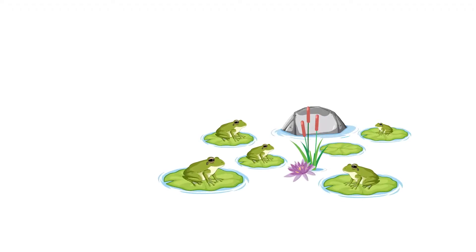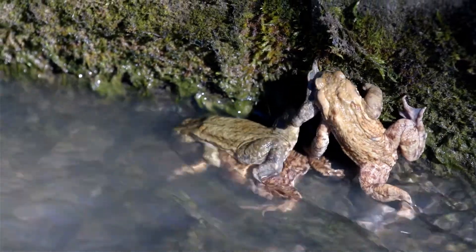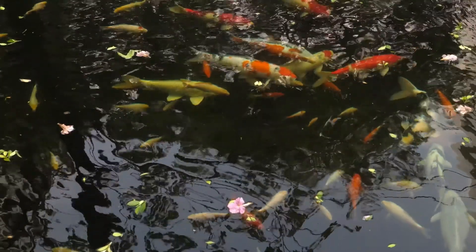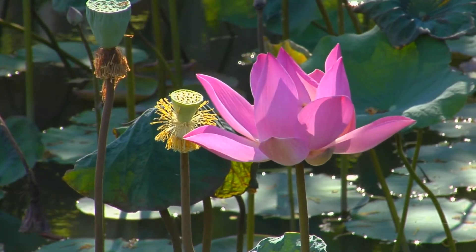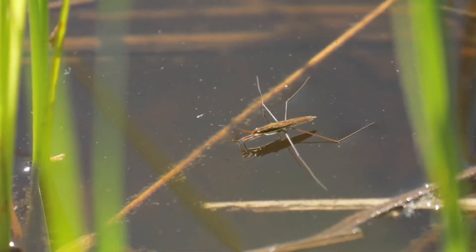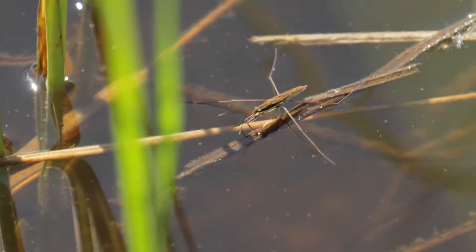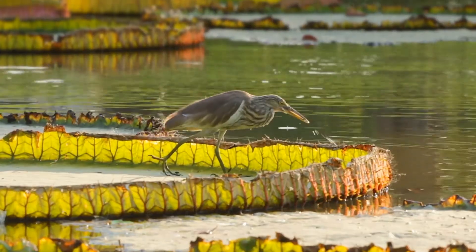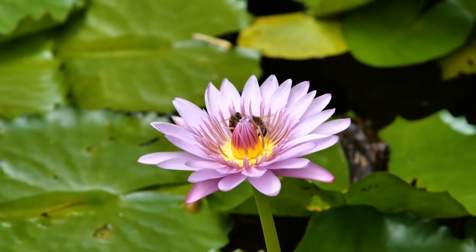Then we broaden our scope to the community level. Here, various populations interact — populations of frogs, ducks, fish, aquatic plants, insects and more. This level highlights the diversity of life forms and their relationships, like predation, competition and symbiosis.